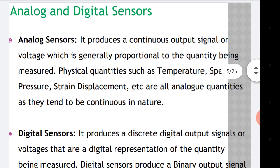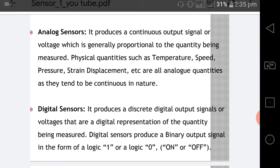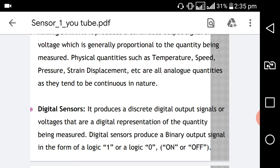The next classification is analog and digital sensors. An analog sensor produces a continuous output signal or voltage which is generally proportional to the quantity being measured. Physical quantities such as temperature, speed, pressure, strain, and displacement are all analog quantities as they tend to be continuous in nature.